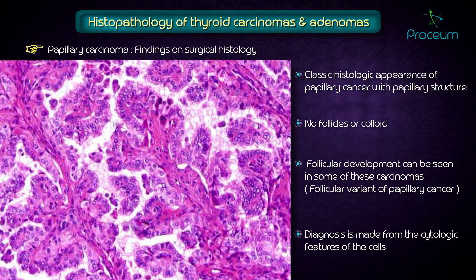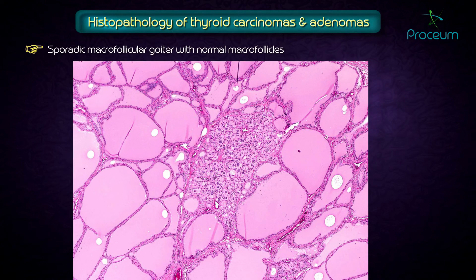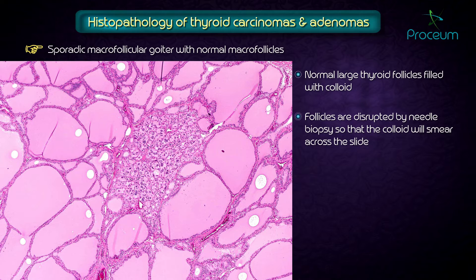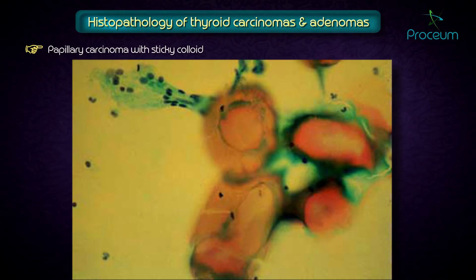The second image is a sporadic macrofollicular goiter with normal macrofollicles. The surgical specimen shows large thyroid follicles filled with colloid. These follicles are disrupted by needle biopsy, so the colloid smears across the slide or occasionally aggregates into droplets. The third image is a papillary carcinoma with sticky colloid on fine needle aspirate.